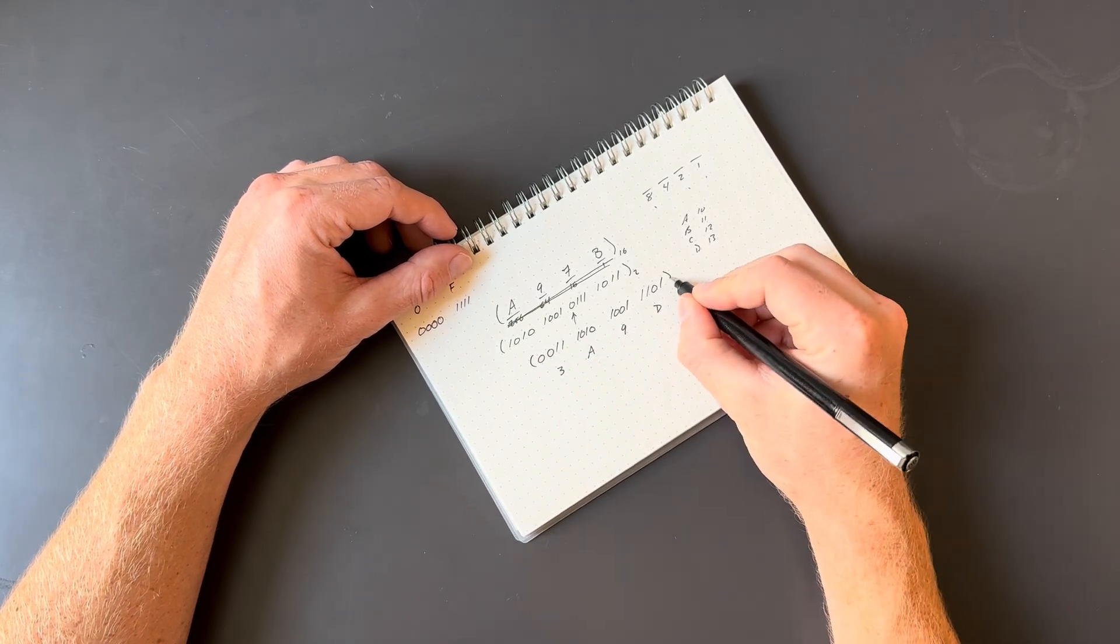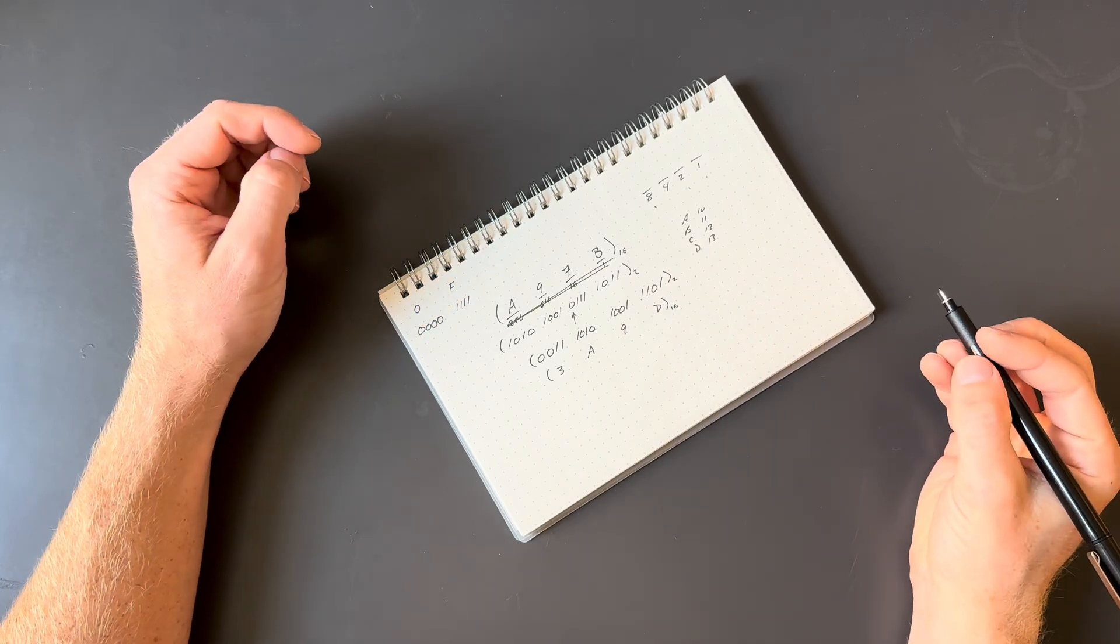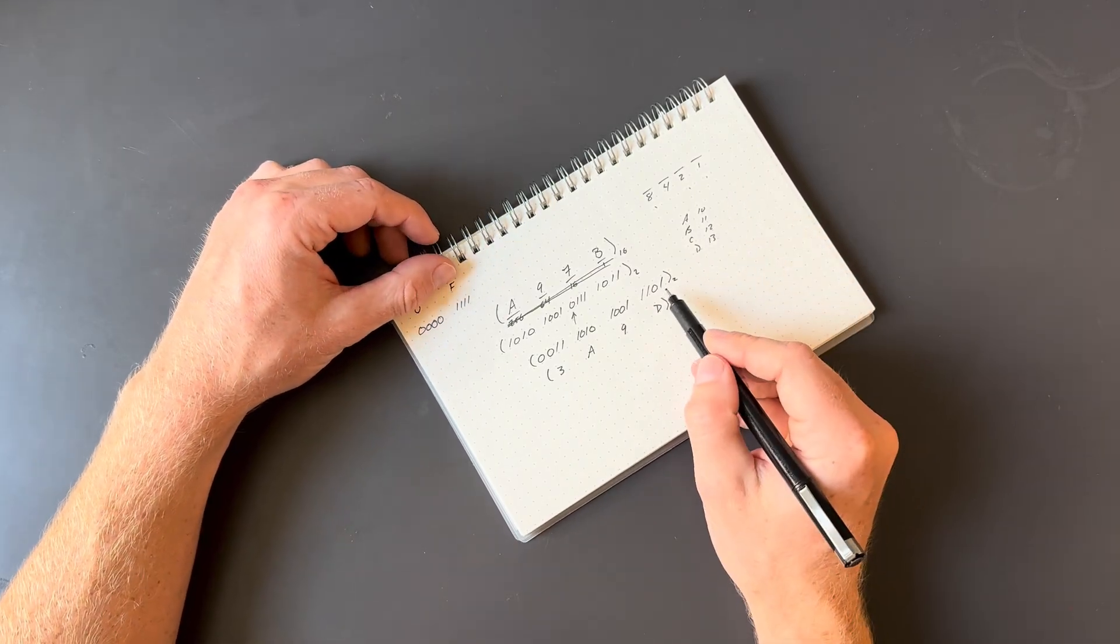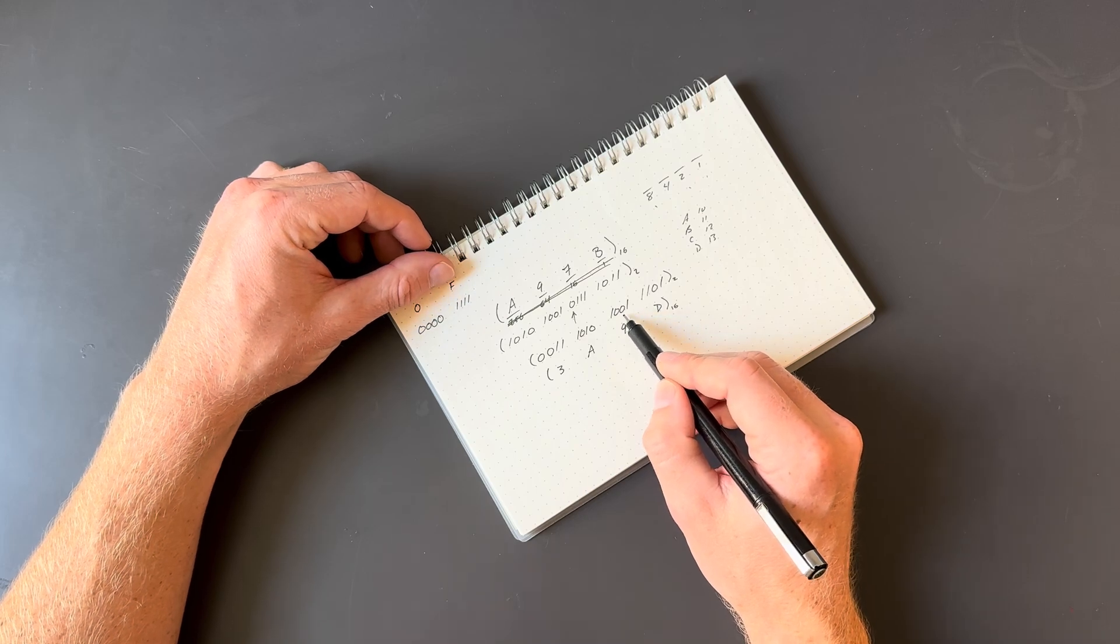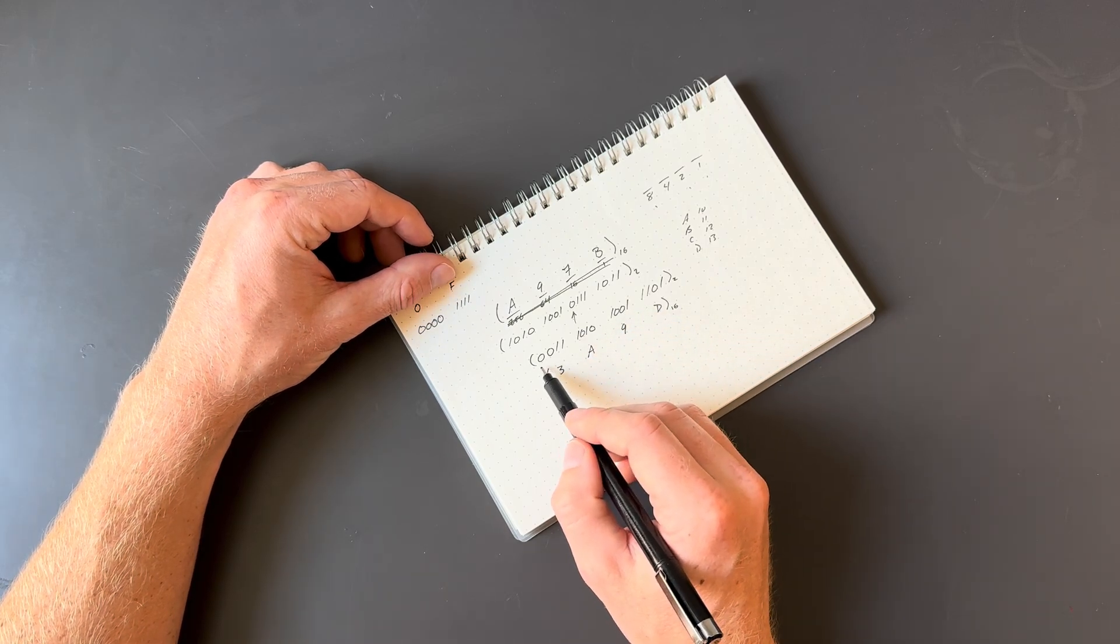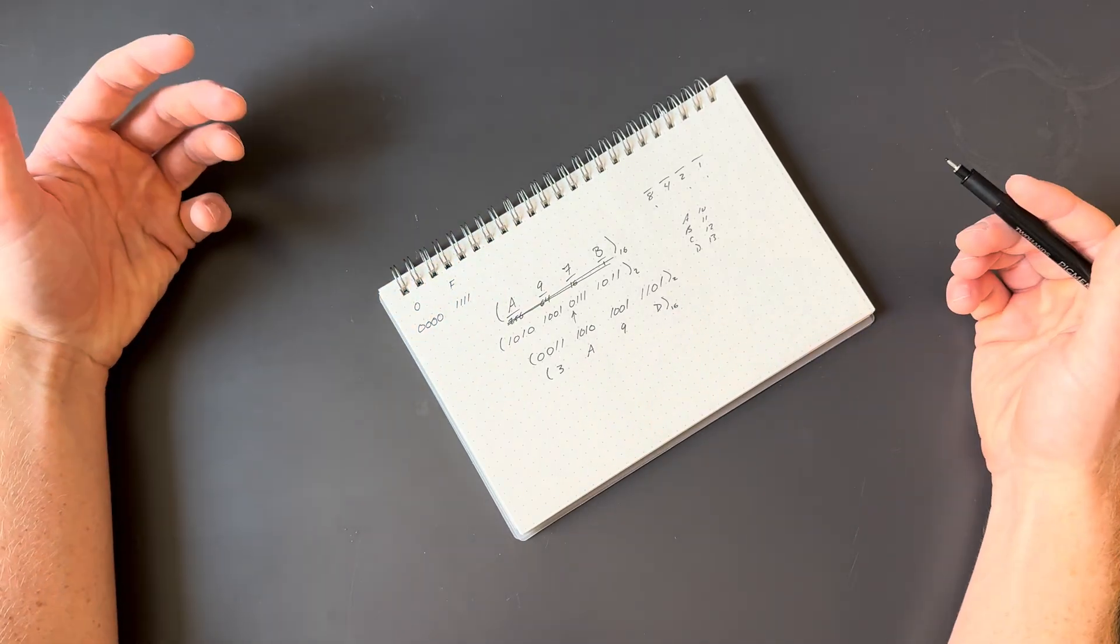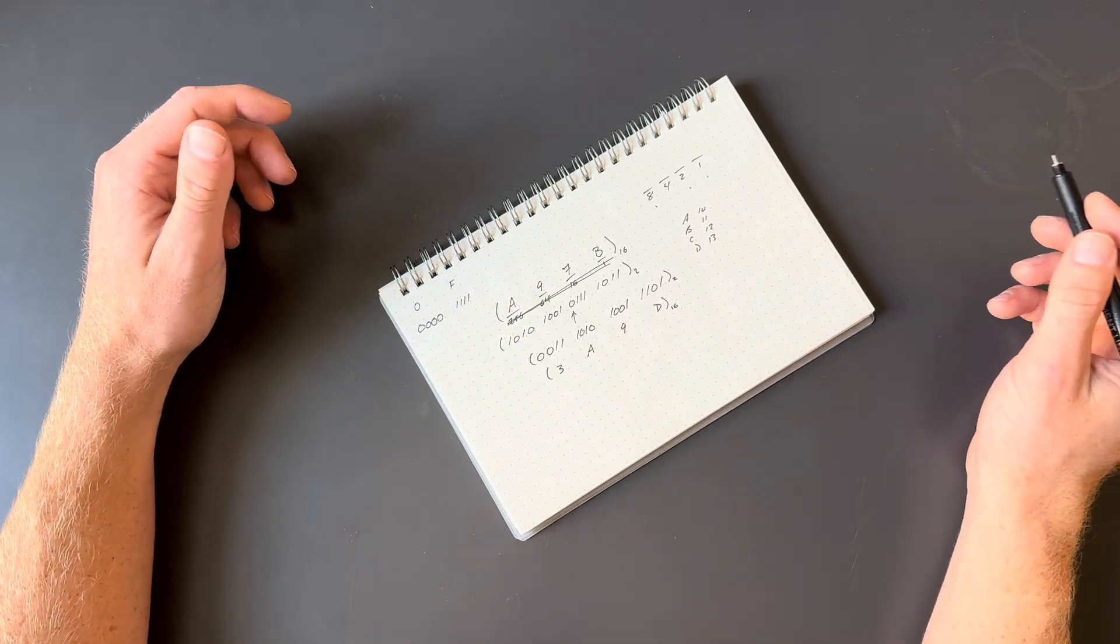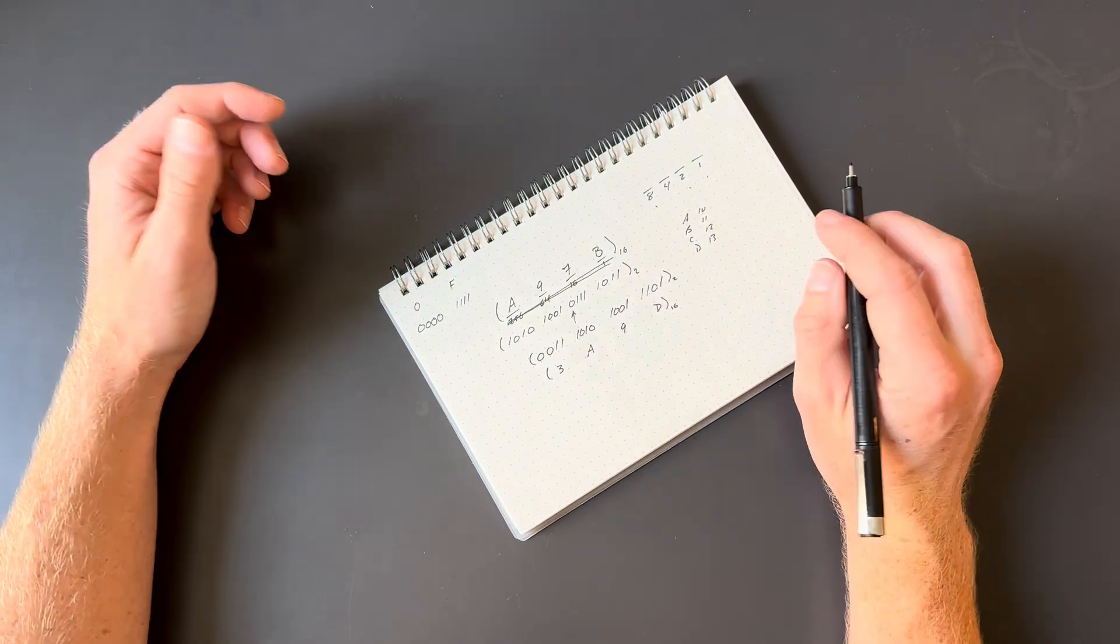So this binary number is exactly equivalent to this hexadecimal number. We didn't have to say, okay, I've got a 1s, 2s, 4s, 8s, 16s, 32s, place 64, and go all the way out to whatever place that is. We're able to just do it in small chunks where we don't need a calculator because we're always working with numbers that are 15 or less. I hope that helps.